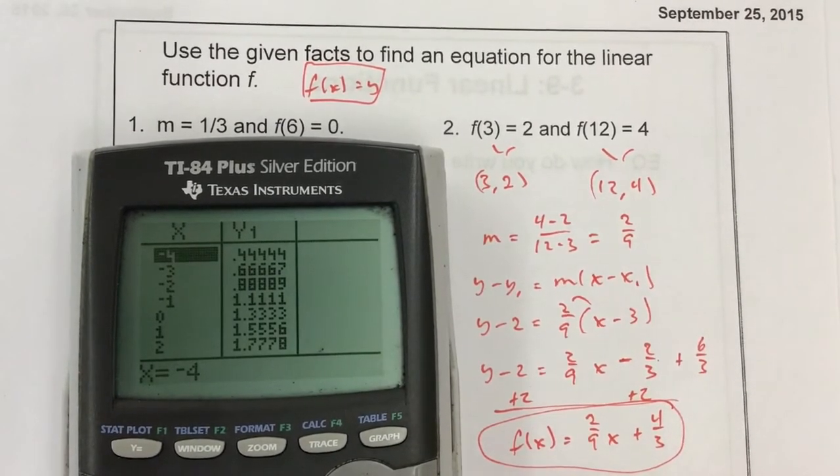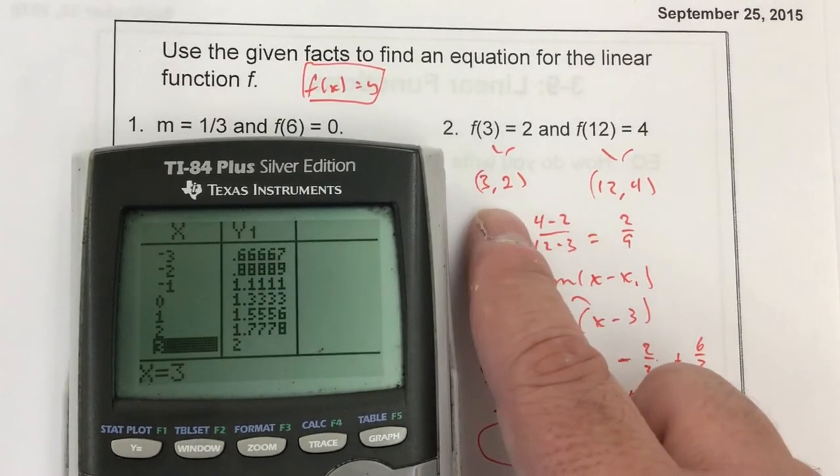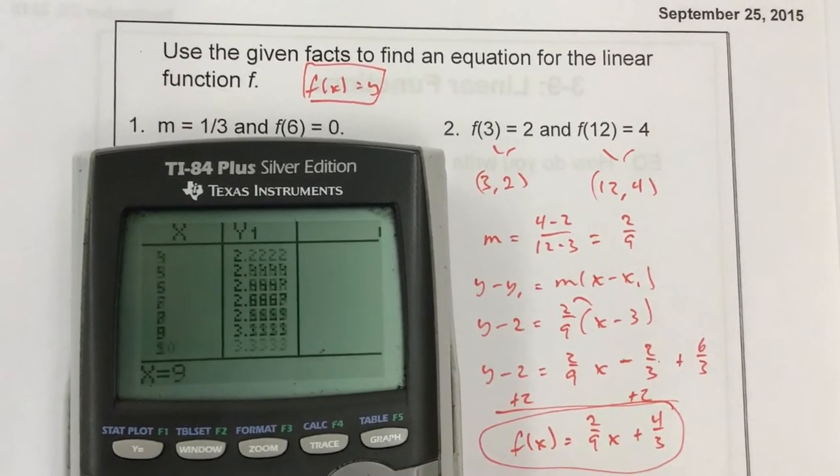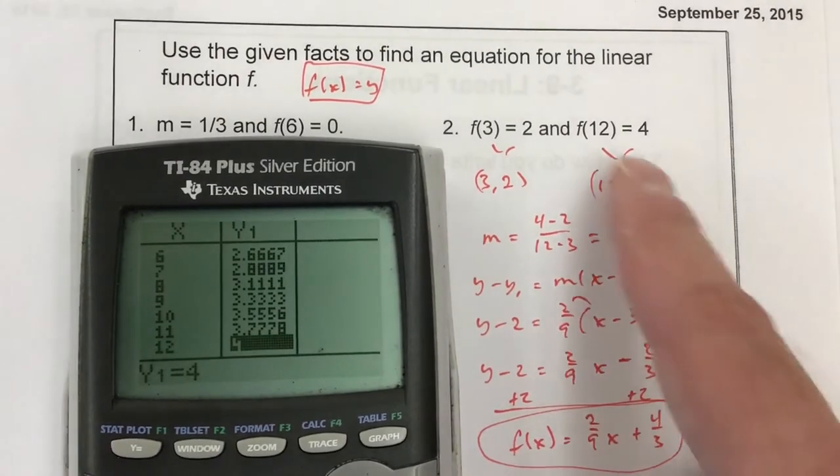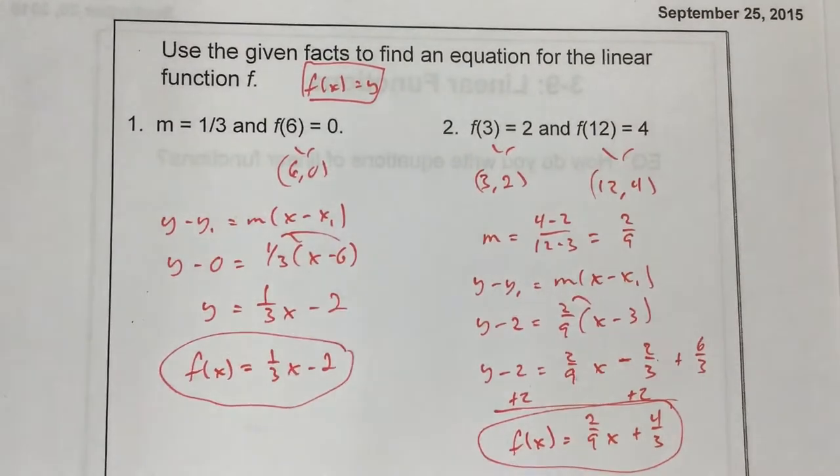When x is 3, I get 2, which is what we should get right here. And when x is 12, we get 4, which we do. So it's easy to check.